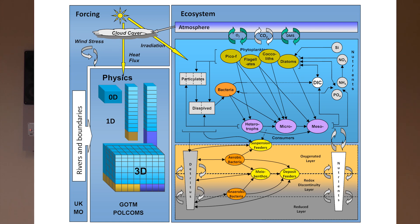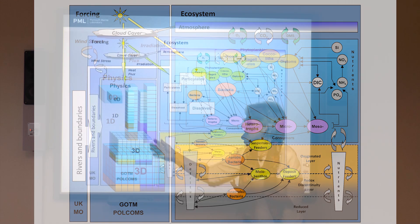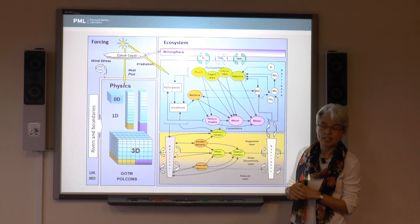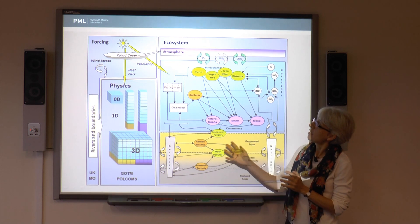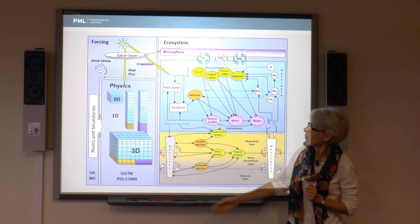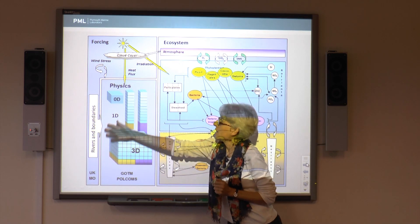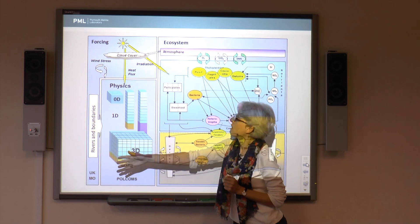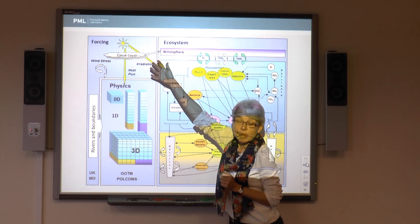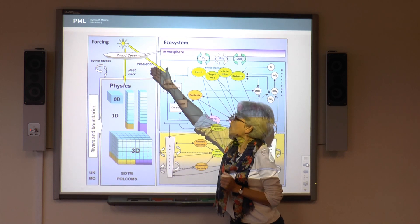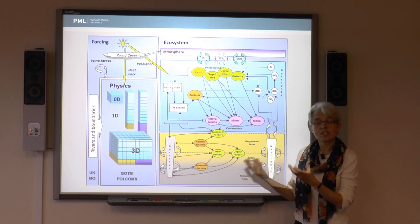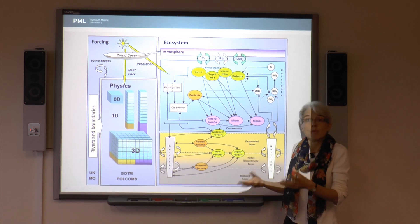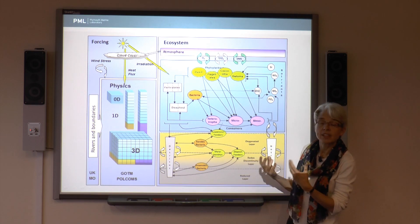But to really get the full dynamics of the ocean, to allow things to move sideways as well, we need 3D models, and that's where the complexity of the model starts to build up so things can move in all three directions. As well as adding the physics within the sea, we also add what's coming in from the outside. So we've got rivers adding nutrients and fresh water, and we've got what's happening up in the atmosphere — the weather that's going on. We can force our model with these externals.